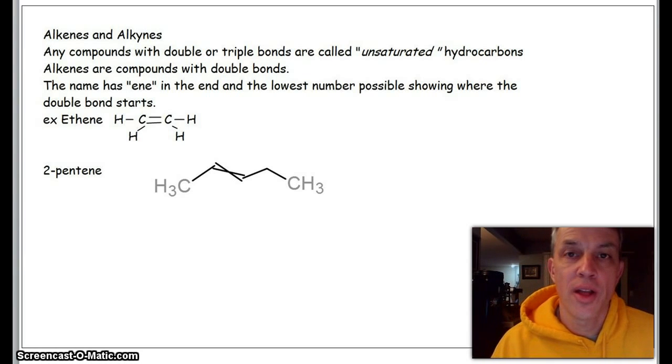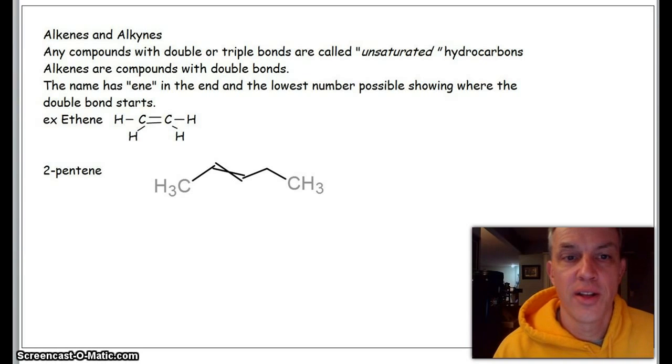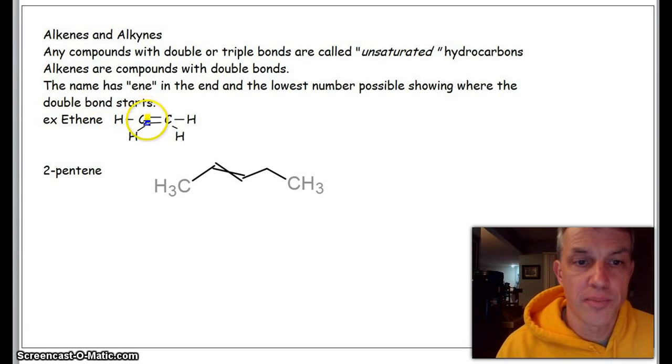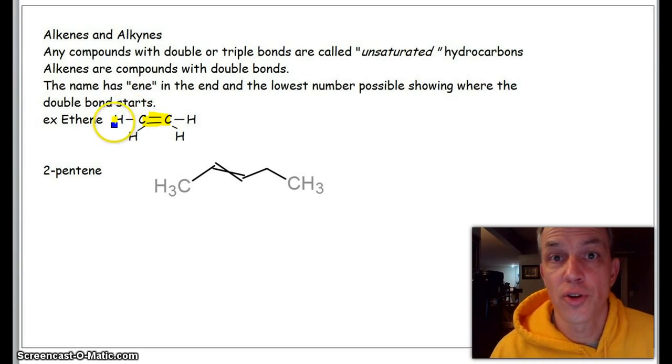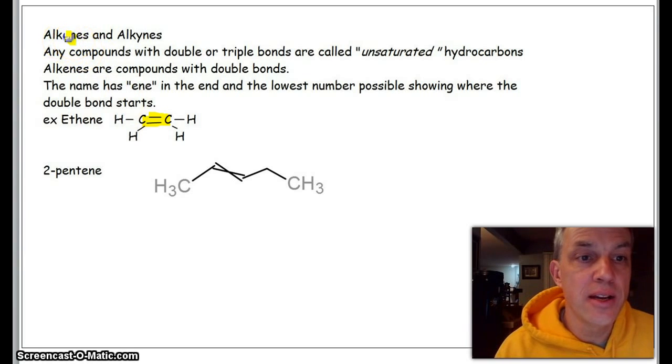If we have unsaturated hydrocarbons, basically what we're finding is that we have a double bond. These double bonds are called alkenes—ends in -ene.